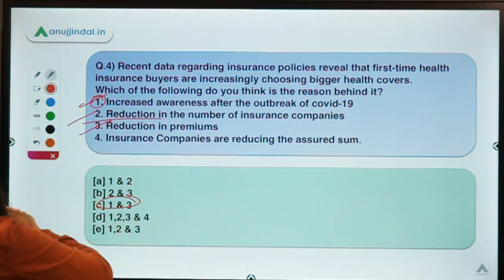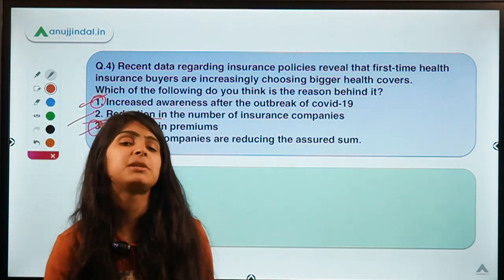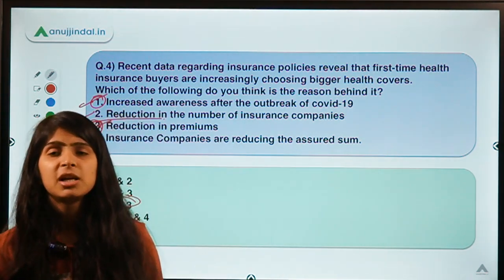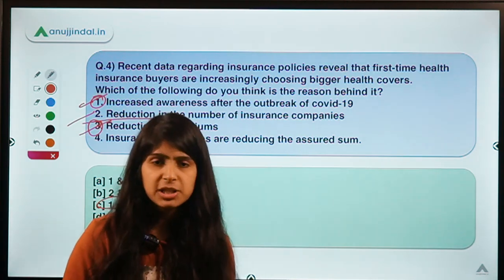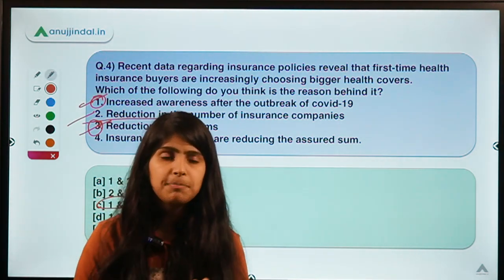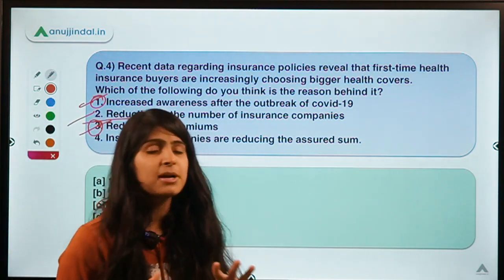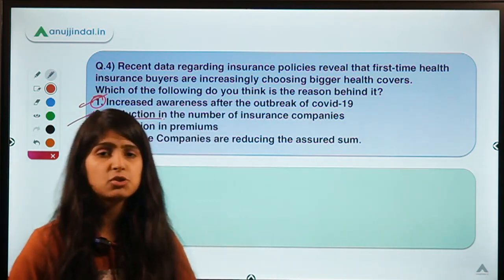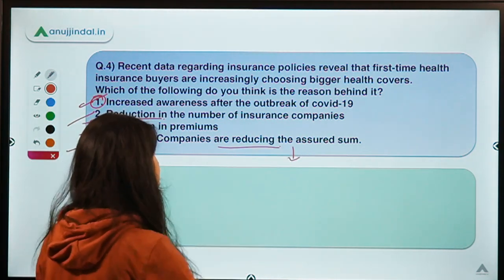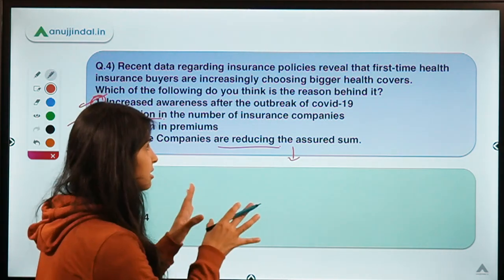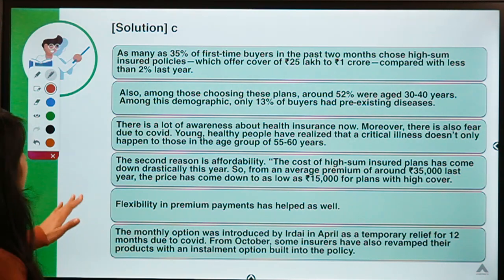The third reason is reduction in premiums — the cost of buying insurance has come down. Insurance companies have reduced costs given the current situation, and government is also trying to regulate insurers to provide benefits to more people. There are also many tailor-made, customized insurance products now available to buyers. The fourth option — insurance companies reducing the assured sum — is incorrect, because if assured sums were reduced, people would not be choosing bigger health covers.